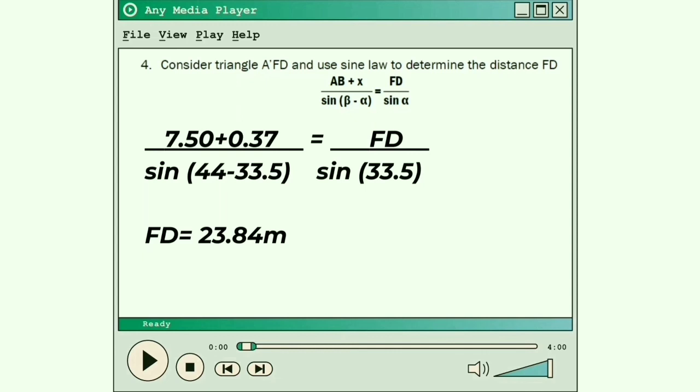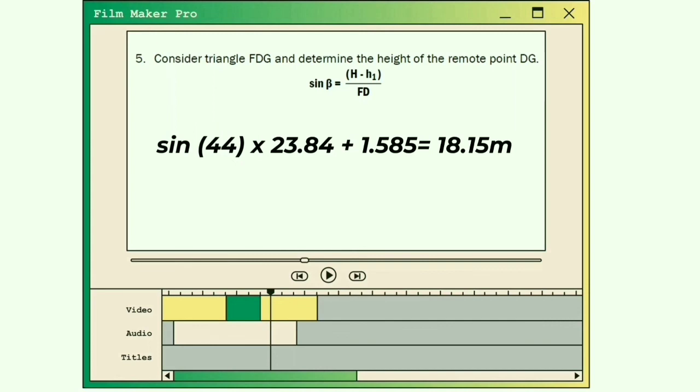Lastly, fifth, consider the triangle FDG and determine the height of the remote point DG. The formula is: sine β equals (height minus H₁) over FD.